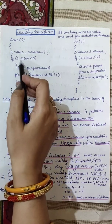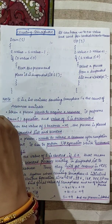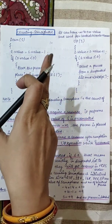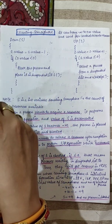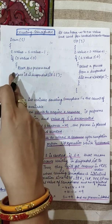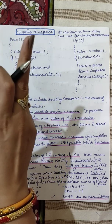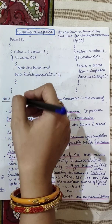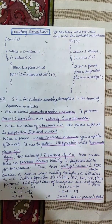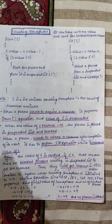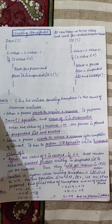अब हमें यह check करना है: if S.value is less than 0 — यानि कि जब यह negative में चले जाए. जब negative में चले जाएगी तो process को block कर देंगे और उसको suspended list में डाल देंगे — वो access नहीं कर पाएगा, क्योंकि negative में value चली गई है. जब किसी process का resource का काम खतम हो जाता है, then it has to perform the up operation — क्योंकि process को release भी करना पड़ेगा उस resource को, ताकि दूसरे processes उस resource को access कर पाएं.